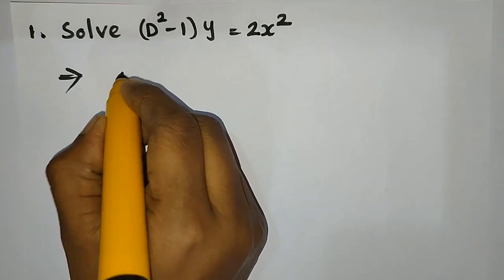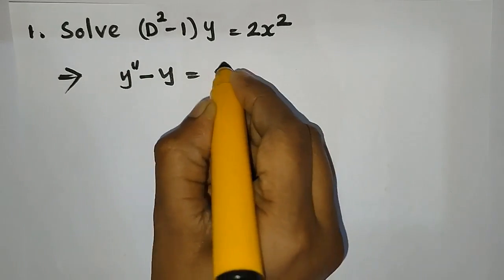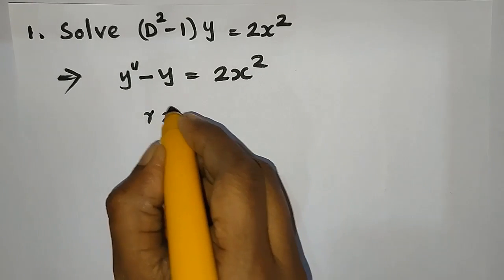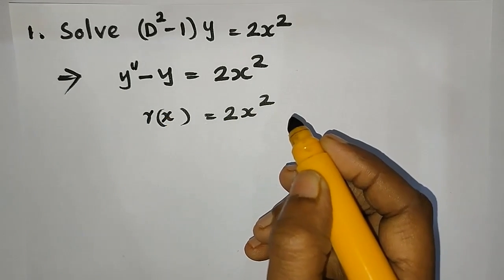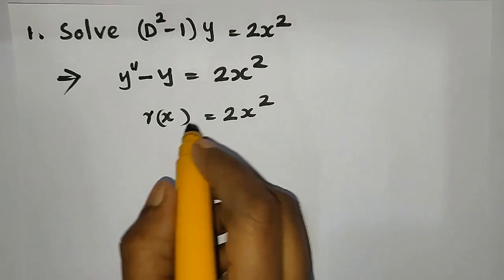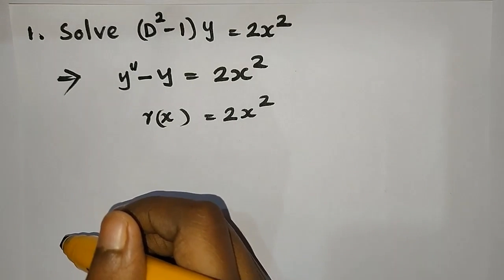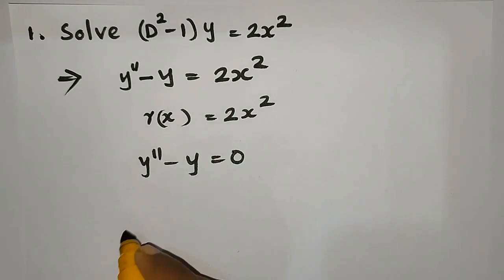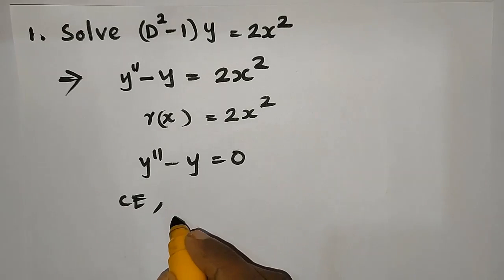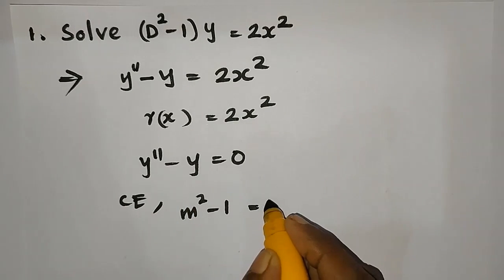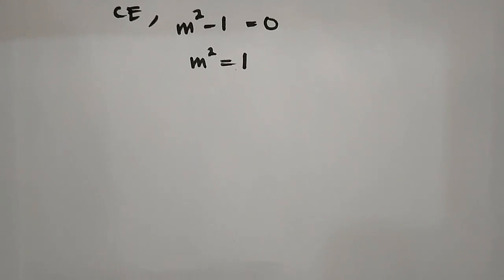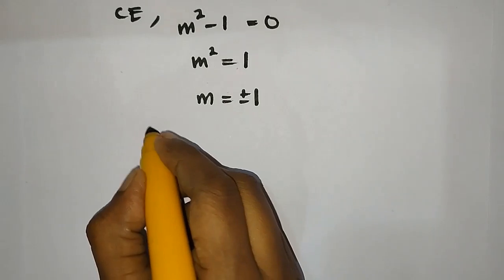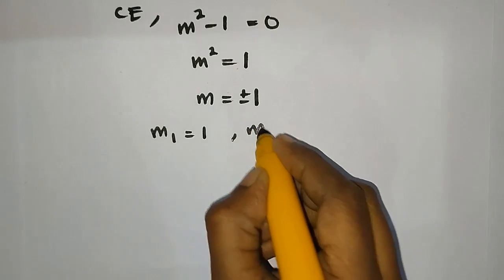The equation is y double dash minus y equal to 2x². Now we have to find the characteristic equation corresponding to the homogeneous equation. r(x) is equal to 2x². The characteristic equation is m² minus 1 equal to 0, giving m equal to plus or minus 1. That means m1 equal to 1 and m2 equal to minus 1.